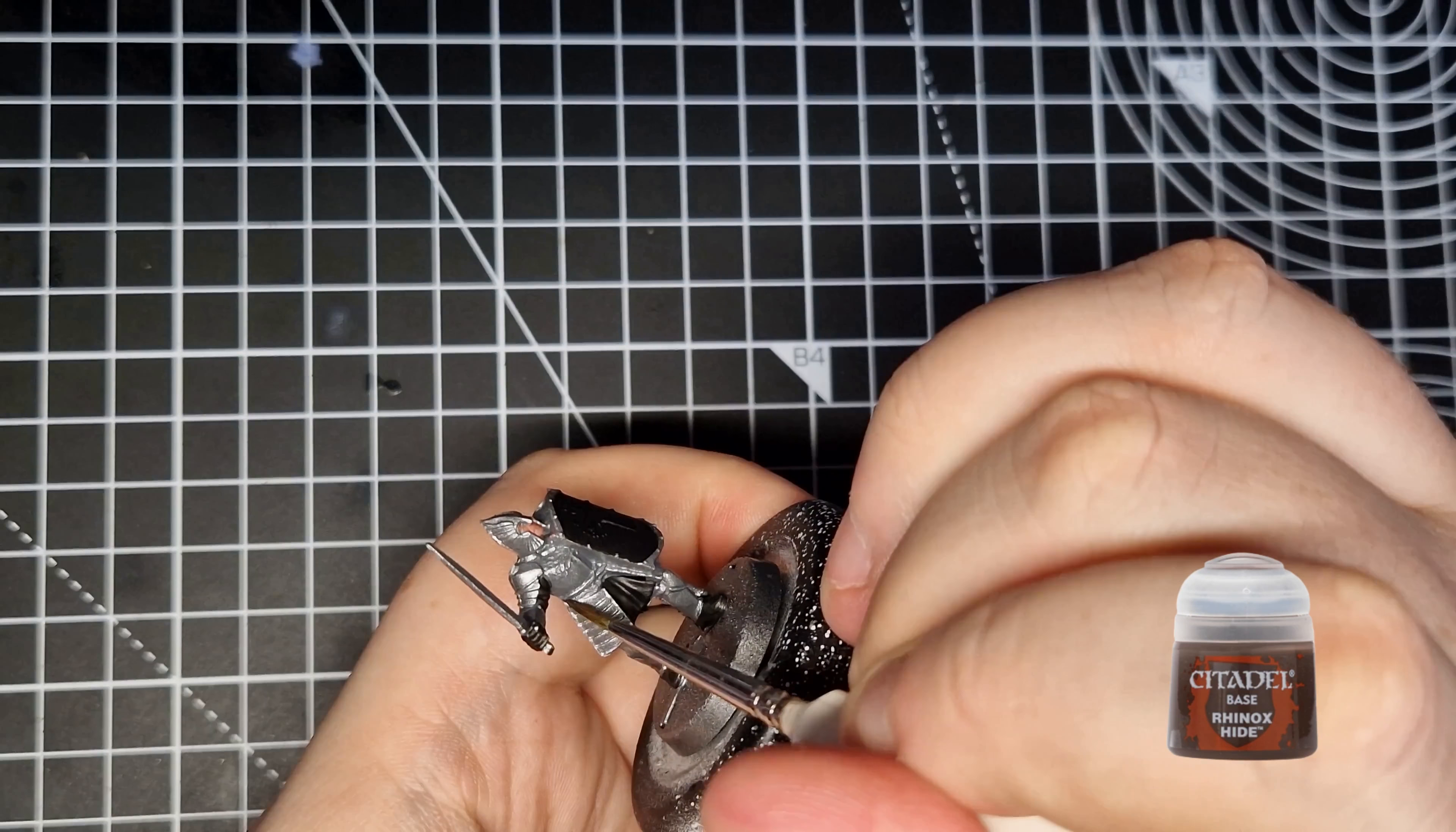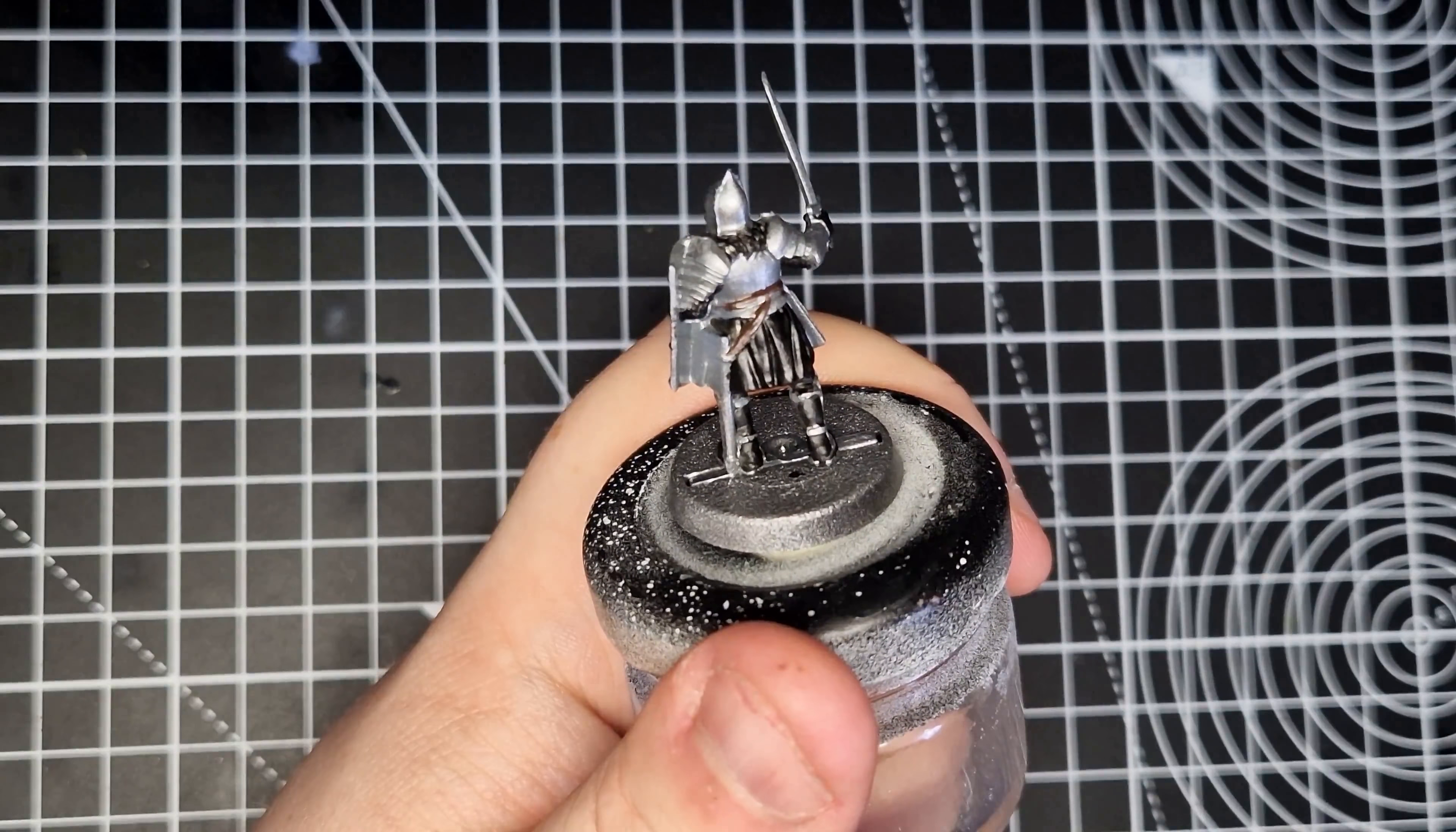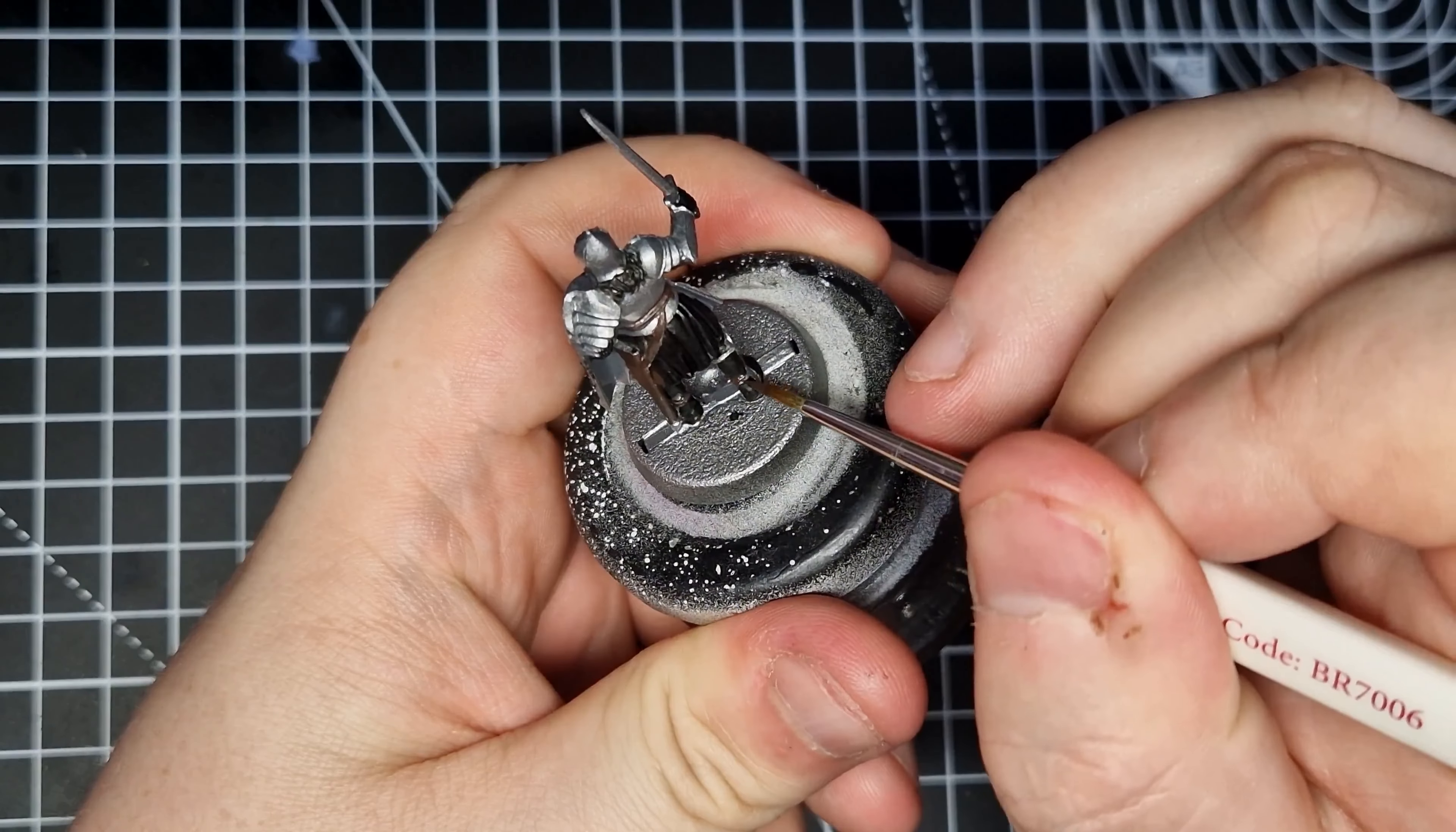Next up, we're going to use Rhinox Hide. We're going to use this for all of the leather parts of the mini. Now, there's quite a few and most of them are very small and fiddly, so you need to take your time and make sure you get them properly. There's the belts around the waist, the scabbard for the sword and the straps at the back of his shin guards that hold his leg armour on.